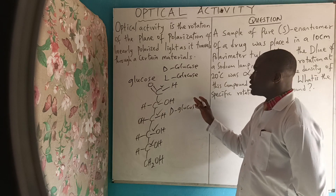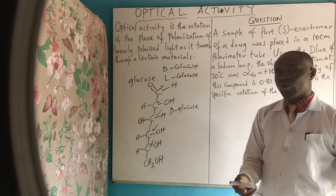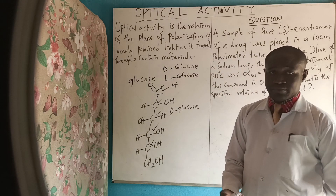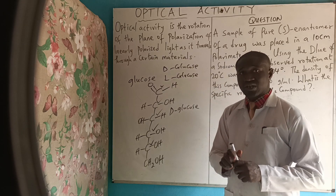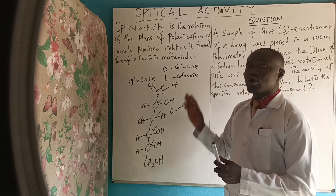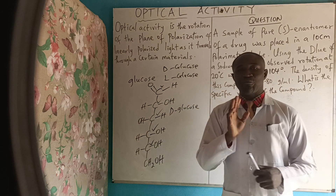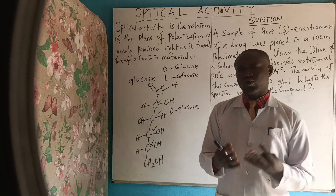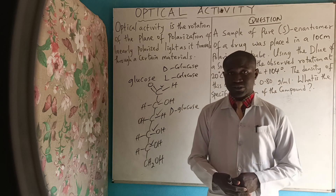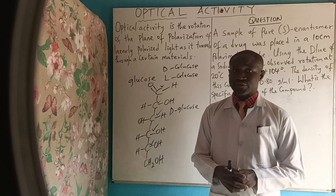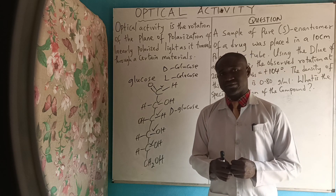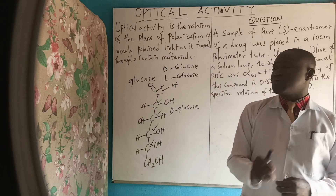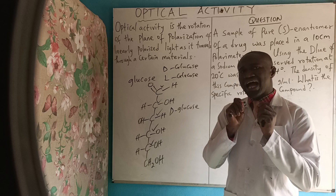If there is anything you don't understand, please use the comment box below. Glucose has what it takes to rotate light rays — either to the left or to the right — and that is why glucose is called an optically active molecule. It is also important to note that other substances are optically active, such as drugs, proteins, and sugars. If you want to measure how optically active a molecule is, there is an instrument best used for that.